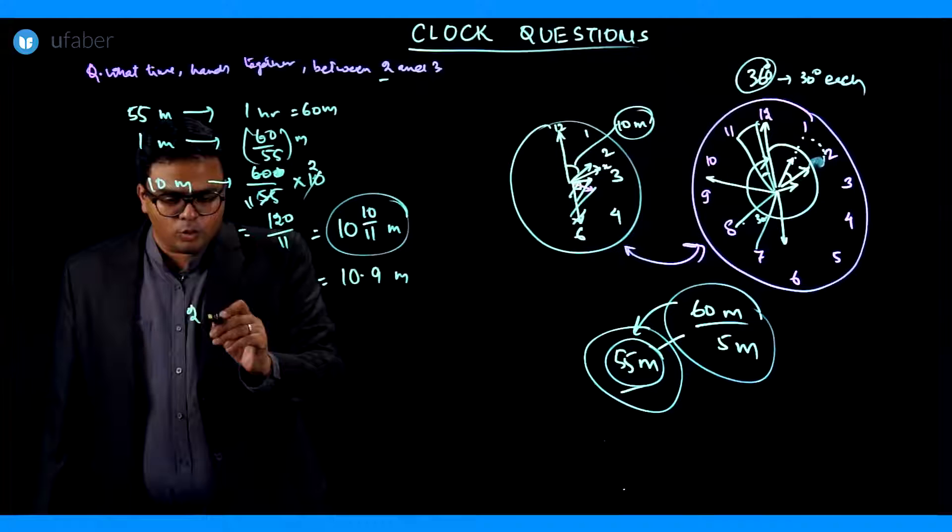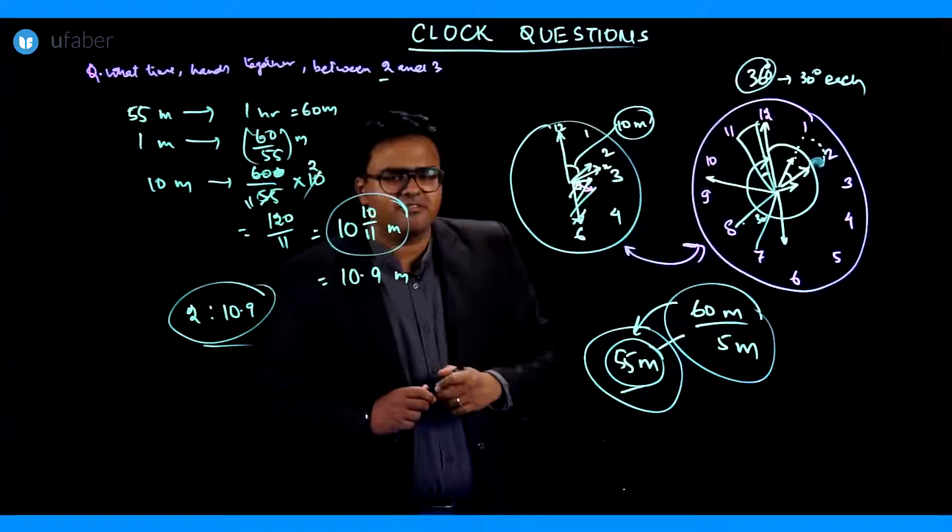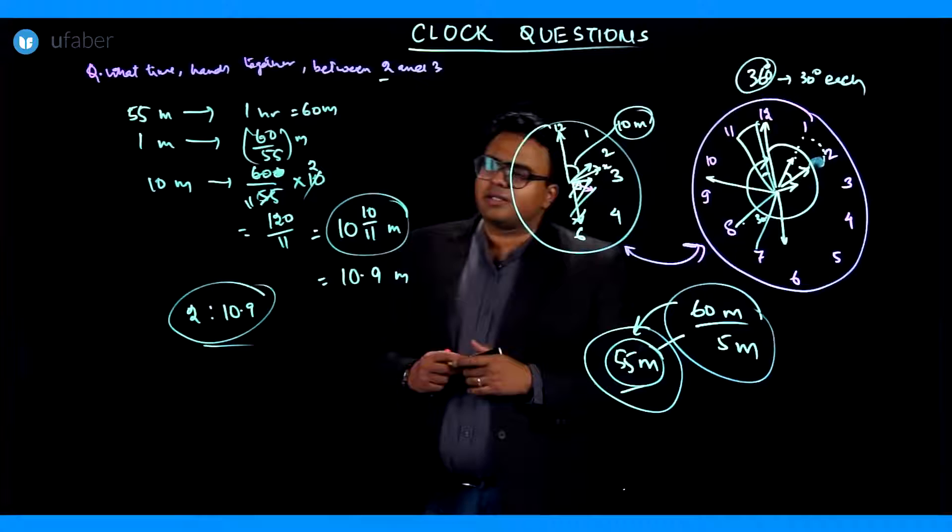They will meet at what time? They started at 2, so they will meet at 2:10.9. When it is almost 2:11, then they will be together. At that point they will be together. This is the first kind of question, very simple. The questions majorly will be of this nature.